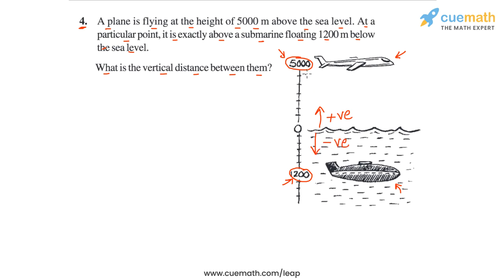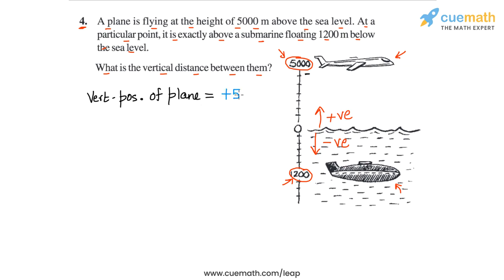Since the plane is 5000 meters above the sea level, how can we represent the vertical position of the plane? The vertical position of the plane will be +5000 meters, because it is 5000 meters above the sea level.